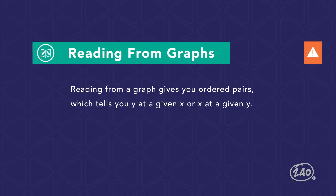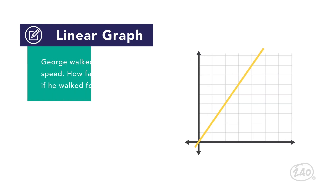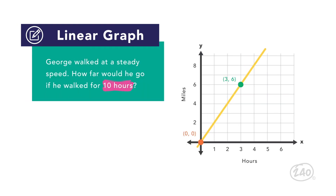Reading from a graph gives you ordered pairs, which tells you y at a given x, or x at a given y. Suppose you were asked how far George would travel if he walked for 10 hours. Here we have an x-value, but the graph cuts off after seven hours. So how could we use the information we already know to find the answer?